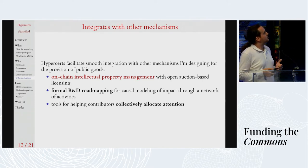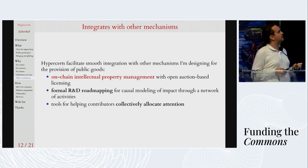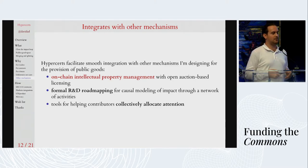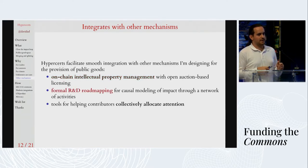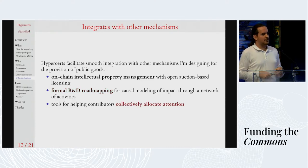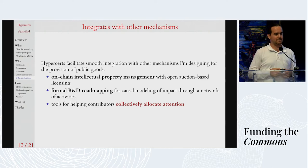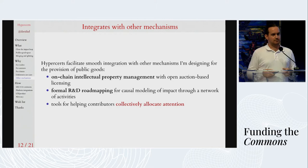Hypercerts is only about 10% of what I work on — I also think about many other mechanisms for provision of public goods, and hypercerts integrates well with those. Part of that's about intellectual property open-auction-based licensing, part is about causal modeling of impact with formal road mapping, and part is about mechanisms for collectively allocating attention based on future anticipations of reward based on causal models. All of these would be much easier with hypercerts than with an unstructured kind of impact certificate.